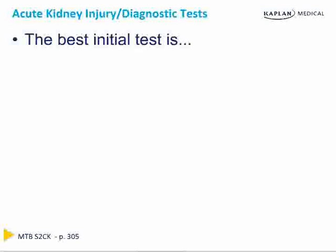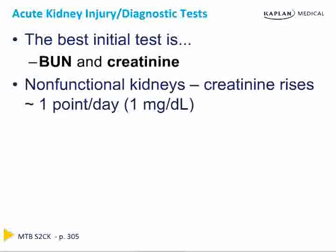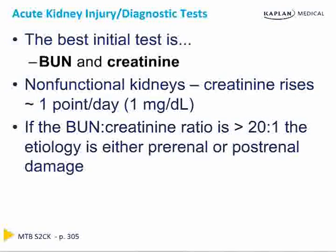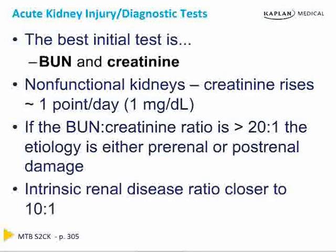The best initial test for AKI is the BUN and creatinine, since AKI is a laboratory diagnosis. In non-functional kidneys, the creatinine will rise approximately one milligram per deciliter per day from the point of injury. Not only the absolute values, but the BUN to creatinine ratio is also helpful. A ratio greater than 20 to 1 suggests prerenal or postrenal causes, while in intrinsic renal disease that ratio is closer to 10 to 1.